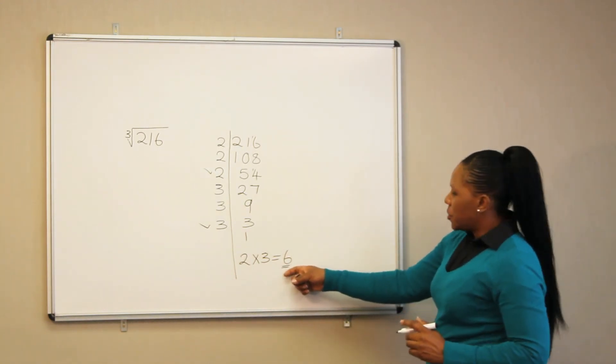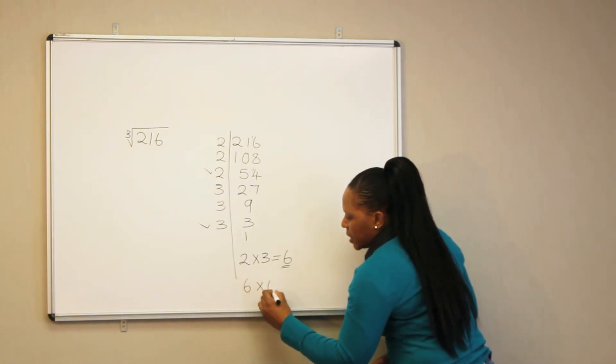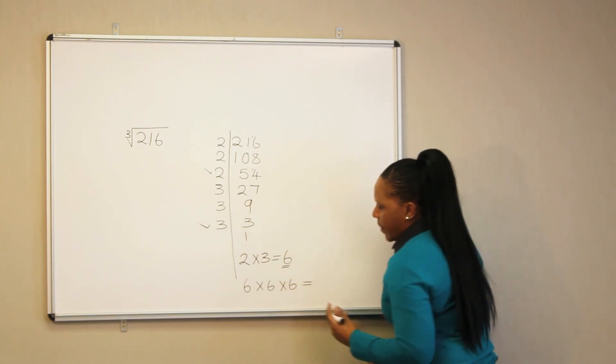So 6 is our cube root. We can prove this by multiplying 6 three times to find our answer, which is going to be 216.